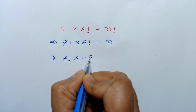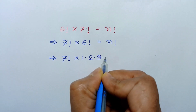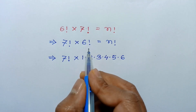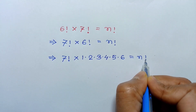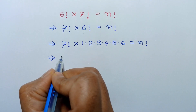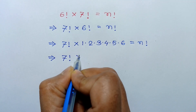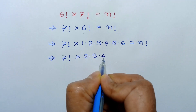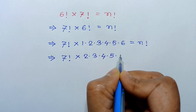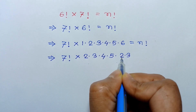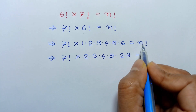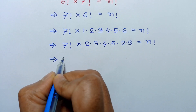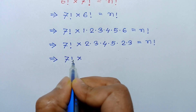This 7 factorial times 6 factorial can be written as 1 times 2 times 3 times 4 times 5 times 6. This 6 factorial is equal to n factorial. This 7 factorial times 1 times 2 is 2, times 3 times 4, times 5 and 6 can be written as 2 times 3. This 2 times 3 is 6.